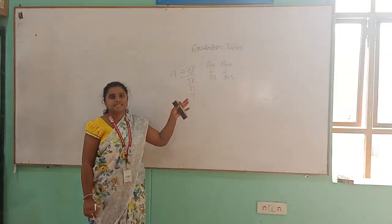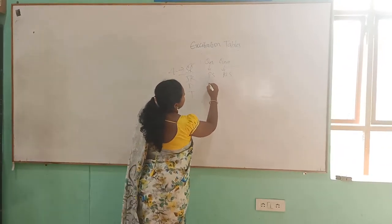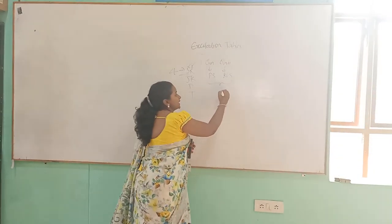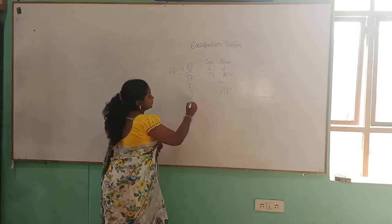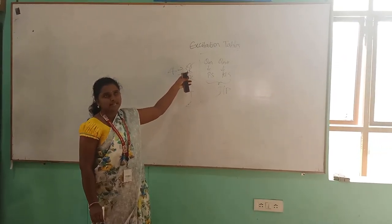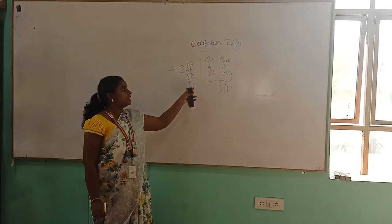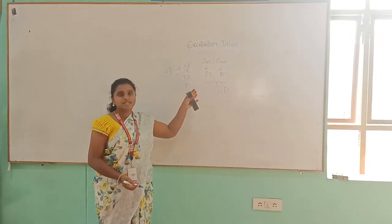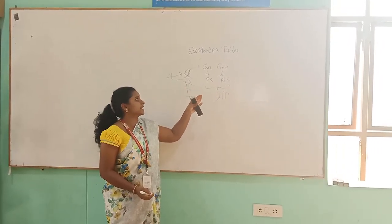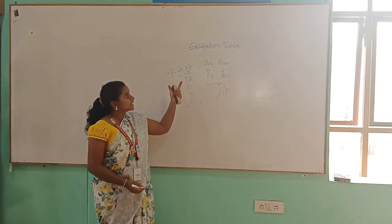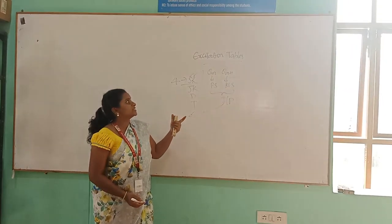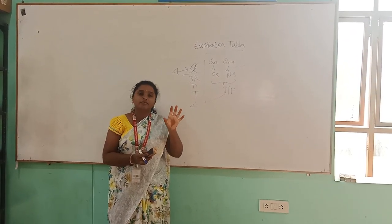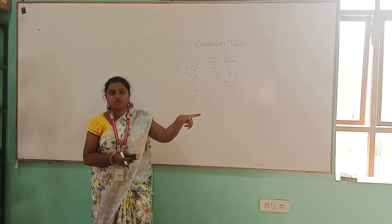If we want to go for the excitation table, what we are going to take is: we will be considering QN (the present state) and the next state as the inputs. By taking these inputs, we have to check what input values — SR, JK, D, or T — we are going to get, either logic 0 or logic 1. That will be considered for the excitation table. The excitation table is opposite to the truth table for a particular flip-flop. First, to draw the excitation table, we have to know the truth table of that flip-flop, and with the help of that, we are going to draw the excitation table.